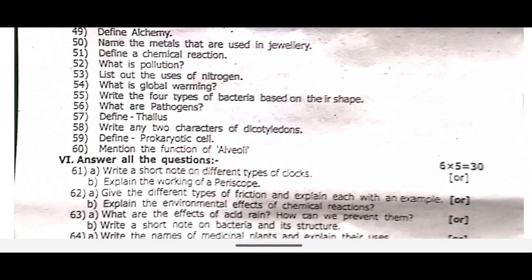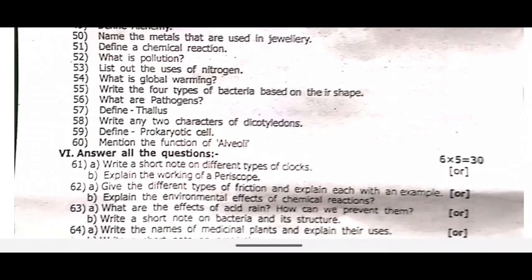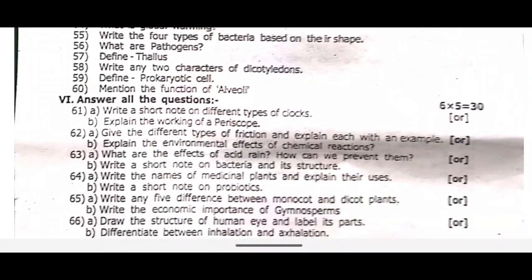Answer all the questions — five marks. You have six questions, 18 marks total, 10 marks. Sixty-one, write a short note on different types of clocks. Explain the working of a periscope.